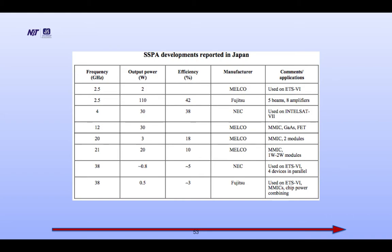SSPA developments reported in Japan: frequency bands from 2.5 GHz to 38 GHz, with corresponding output power from 2 Watt to 110 Watt. Power consumption is as low as 0.5 Watt. The best efficiency shown is at 2.5 GHz where output power is 110 Watt with 42% efficiency by Fujitsu. Comments or application: 5-beam or 8 amplifiers.